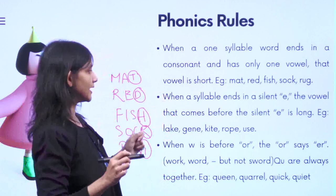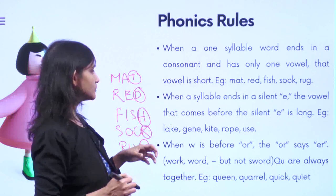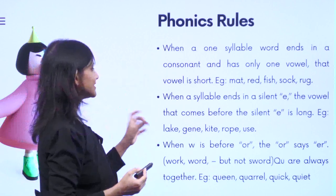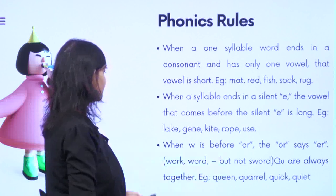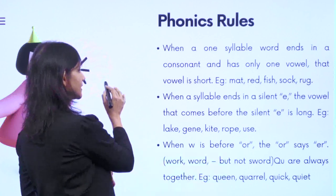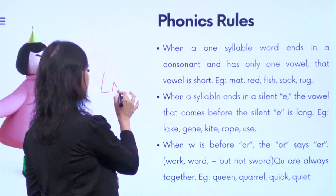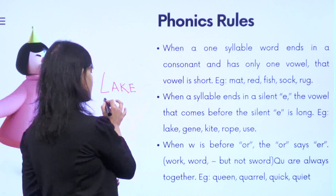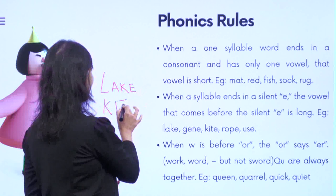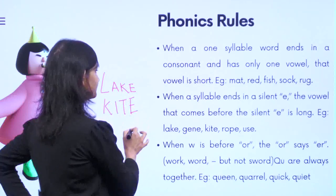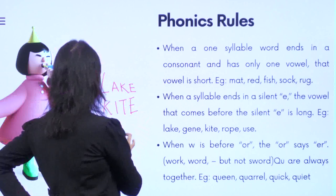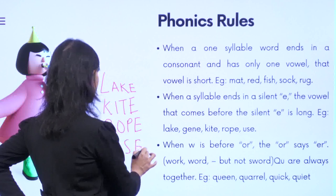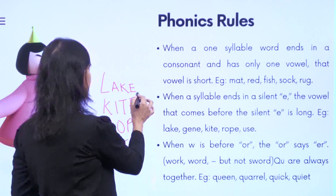Coming to the second rule: when a syllable ends in a silent E, the vowel that comes before the silent E is long. Look at the word 'lake' — that is an example. Other examples are: kite, rope, and 'use'. These are again one-syllable words ending in a silent E.